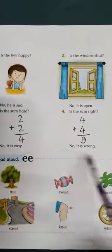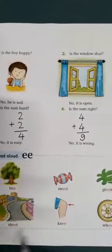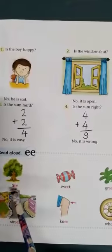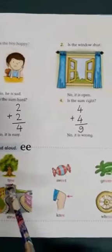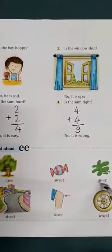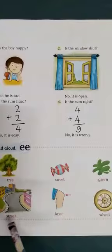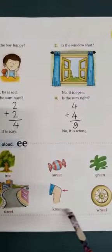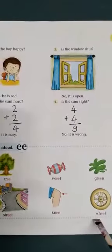Now we will read the words given below. Let's start: tree, sweet, green, street, knee, wheel.